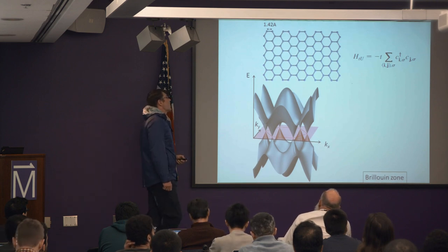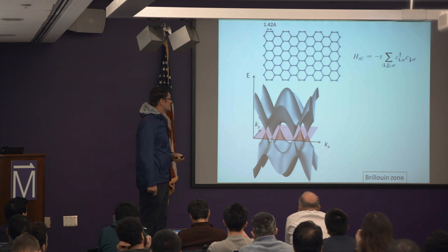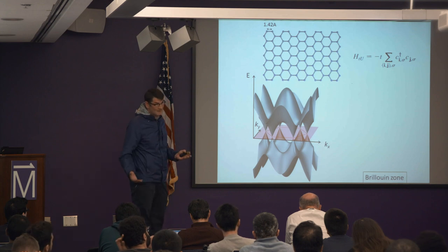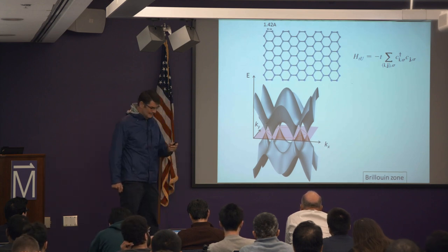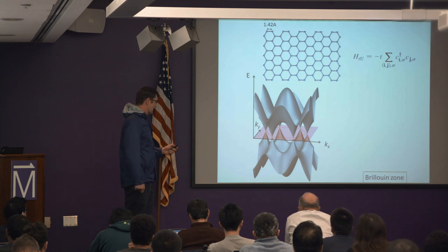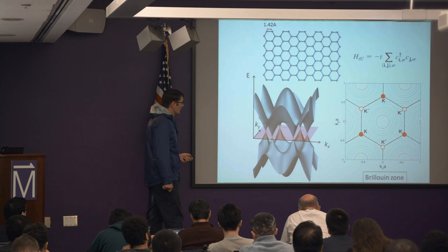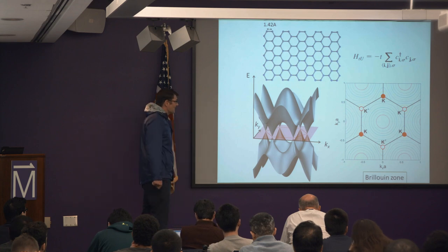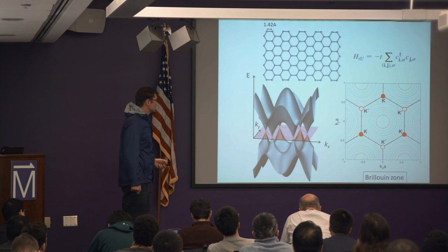Near these two inequivalent points we have a massless Dirac equation, which is famous and well known. This is protected by inversion and time reversal, assuming no spin-orbit coupling. Spin-orbit coupling is always present but tiny, and could open a tiny gap, but at such low energy it's not practical to discuss. So we have two inequivalent points K and K′ with Dirac points, and these are the contours of constant energy showing the dispersion near these points.